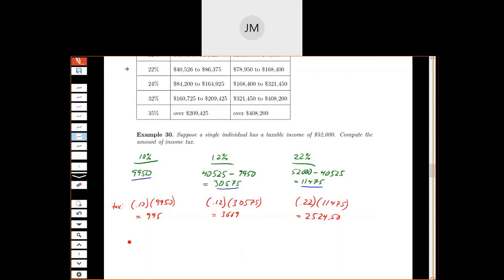So then our tax owed, our computed tax is $995 plus $3,669 plus $2,524.50. So we get $7,188.50.